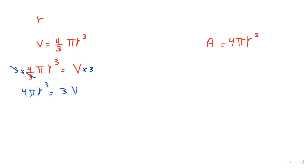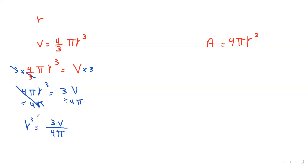Now divide both sides by 4pi to isolate r cubed — cancel, so r cubed equals 3V over 4pi. To get r, since it is raised to the power of 3, we take the cube root. So r equals the cube root of 3V over 4pi. The subject has been changed.